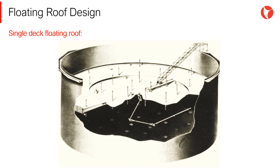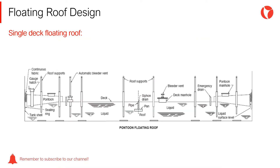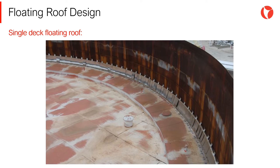Single deck floating roofs consist of a flat central cover surrounded by pontoons — floats — which are divided gradually into compartments. Since the roof is exposed to the environment, the design must warranty adequate drainage. The central cover is formed by a membrane made of steel plates, overlapped and welded by means of a fillet weld, usually only in the upper part and connected to the inner part of the pontoon. The different parts of this type of roof are shown on the screen.